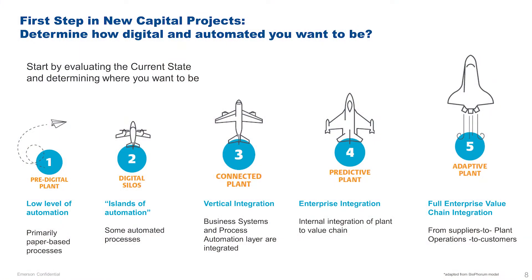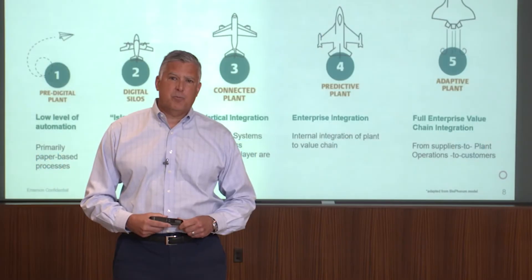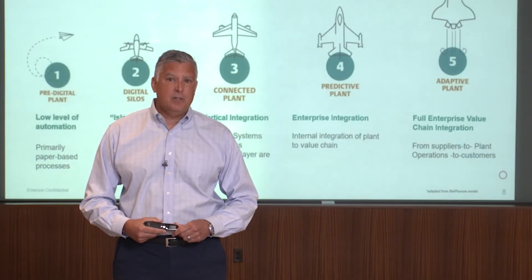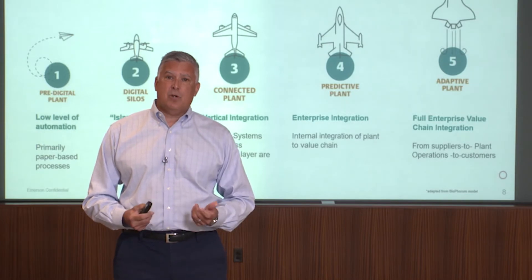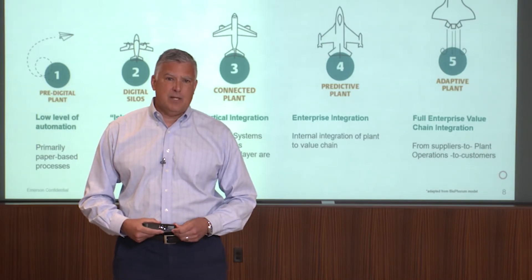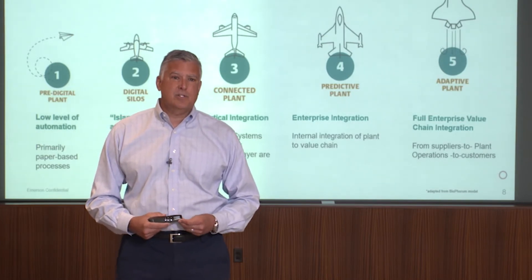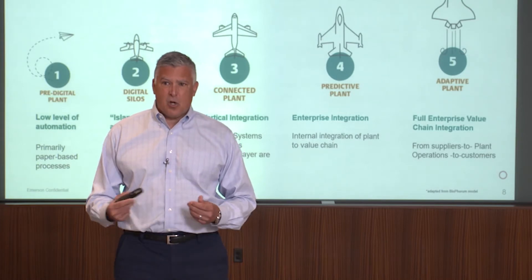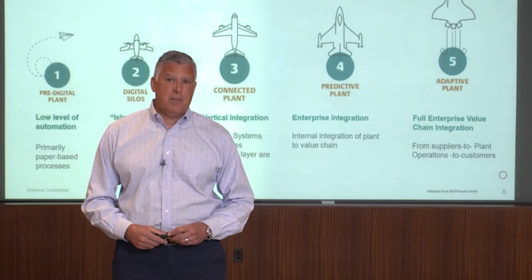The first step is to determine your vision and your end game — just how autonomous, automated, or digital do you want to be. Looking at the spectrum of what's available, we can start with the way we've done things in the past with manual paper forms and passing data back and forth manually, or we can look at what we see today: islands of automation where operations systems such as a DCS talk to other systems and pass data automatically.